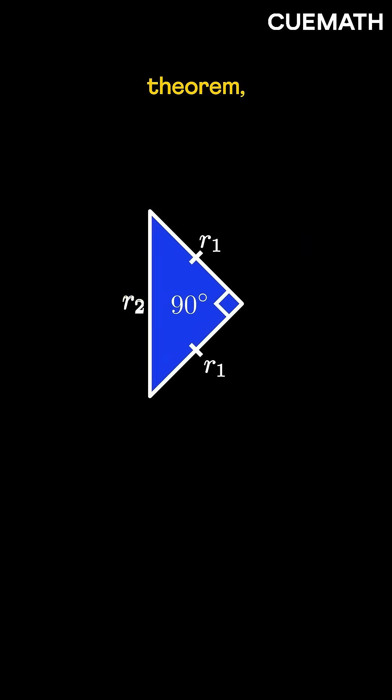Applying Pythagorean theorem, we get r2 squared equals r1 squared plus r1 squared, or twice r1 squared.